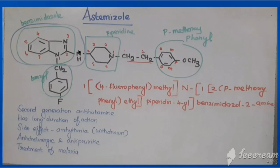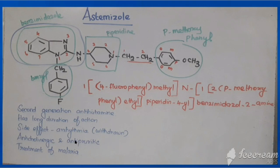The heterocyclic rings present in astemizole are benzimidazole and piperidine. It has a para-fluorobenzyl group at position 1, and para-methoxyphenyl connected with ethyl on the piperidine. It is a second-generation antihistamine with long duration of action. Its main side effect is life-threatening arrhythmia, which is why it has been withdrawn from the market. It also has anti-cholinergic and anti-pruritic action and is used in the treatment of malaria.